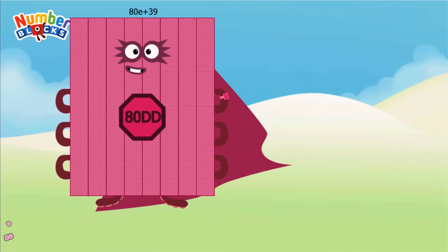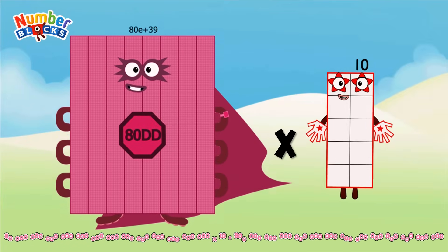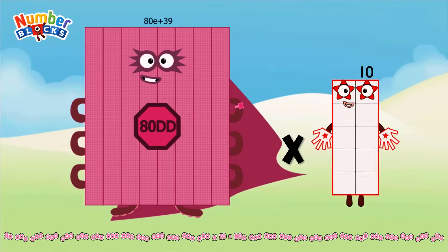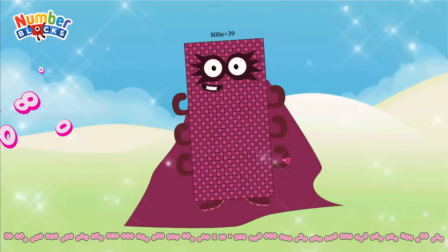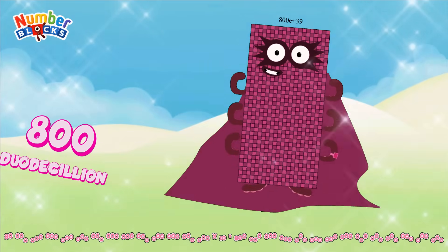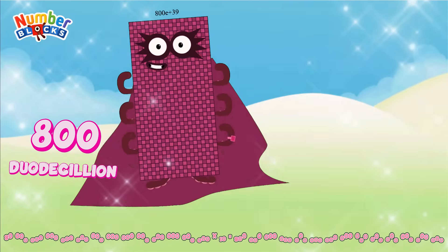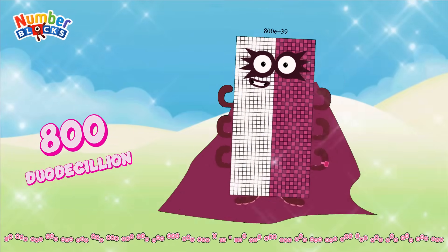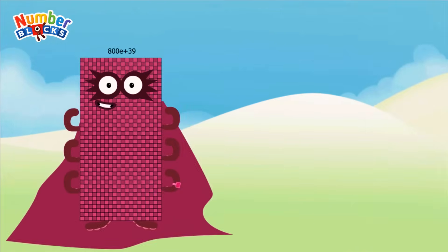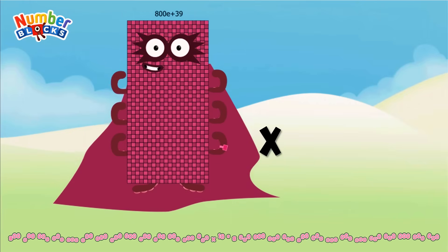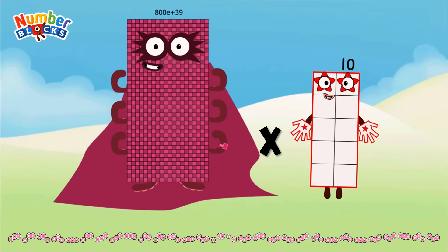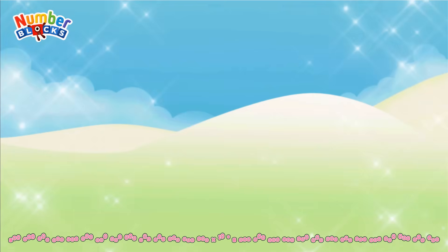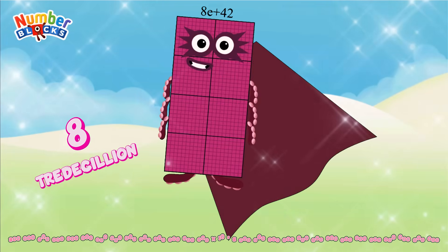80 duodecillion multiplied by 10 equals 800 duodecillion. 800 duodecillion multiplied by 10 equals 800 duodecillion.